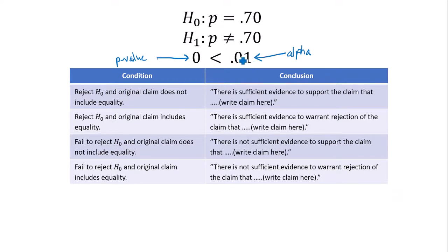The p-value is less than alpha. Anytime the p-value is below alpha, you are able to conclude and reject the null hypothesis. So reject H-naught.